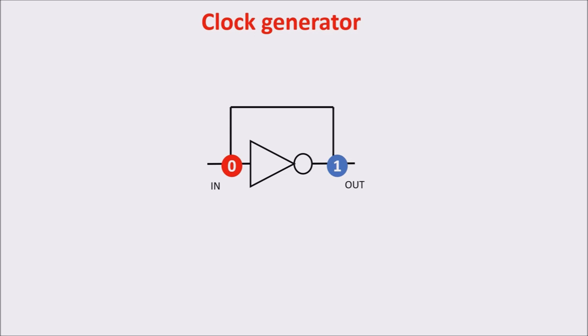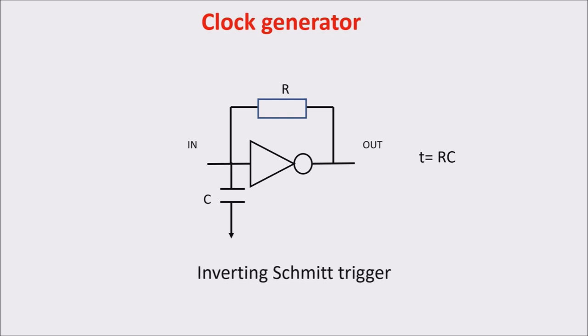But the problem here is that this occurs too quickly and it cannot be used for almost anything in this configuration. In order to slow down the clock frequency of this inverter with positive feedback, we add a capacitor and a resistor. In this way, we can set the product RC for controlling the oscillation period.